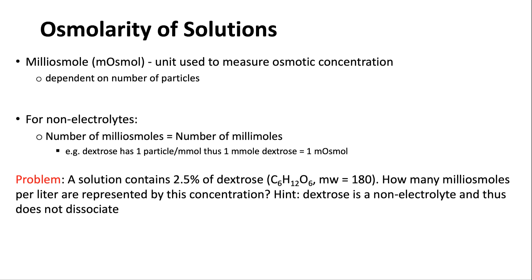Let's start with the easiest example for counting particles: non-electrolytes. For a non-electrolyte like dextrose, if you have one millimole and put it into solution, it's non-ionic — the molecule stays together, nothing falls off. So you have the same number of particles as millimoles. One millimole of a non-ionic chemical equals one milliosmole. This relationship only holds true for non-ionic particles.